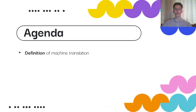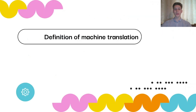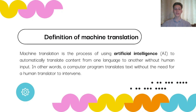First of all, we will define what is machine translation and the types of it, especially Neural. Then we will talk about the SEQ-to-SEQ model and some project details. Machine translation is the process of using artificial intelligence to automatically translate content from one language to another without human input — a computer program translates text without the need for a human translator to intervene.